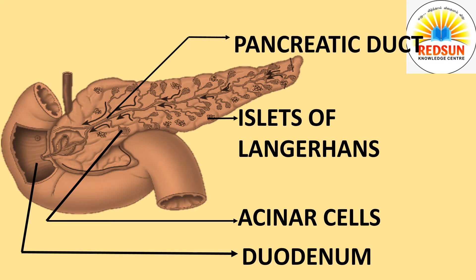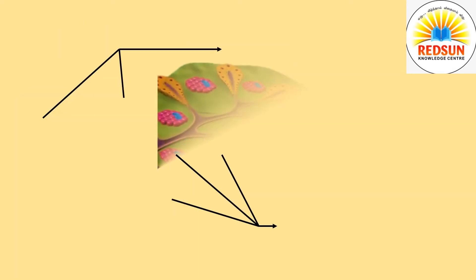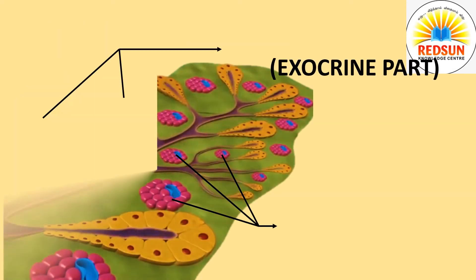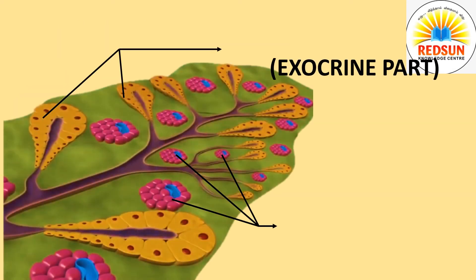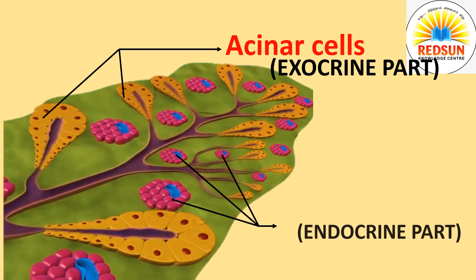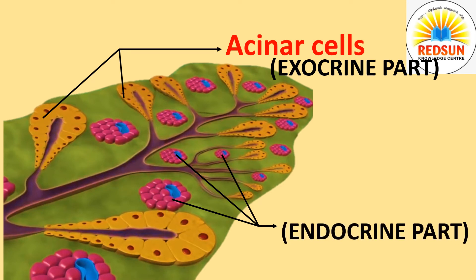Pancreas is also known as mixed gland because it acts as both exocrine and endocrine glands. The exocrine part of the gland consists of acinar cells. At the same time, the endocrine part of the gland consists of islets of Langerhans.